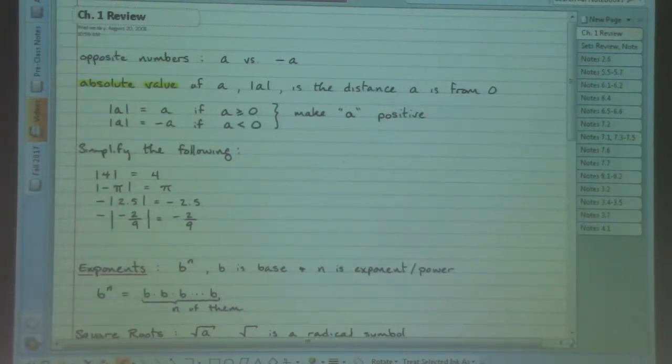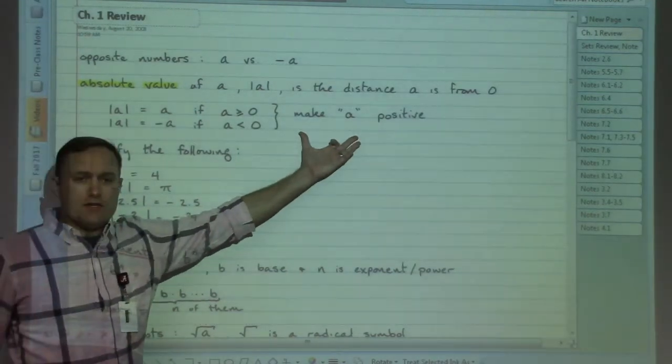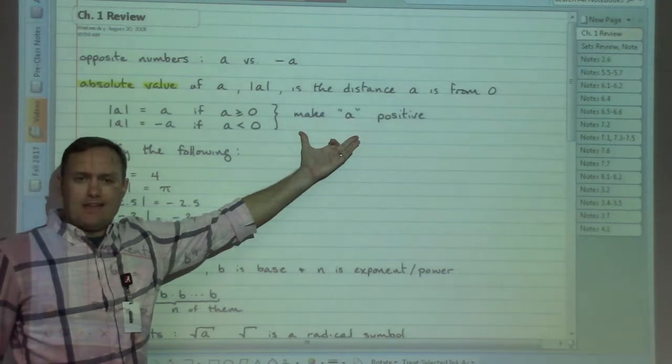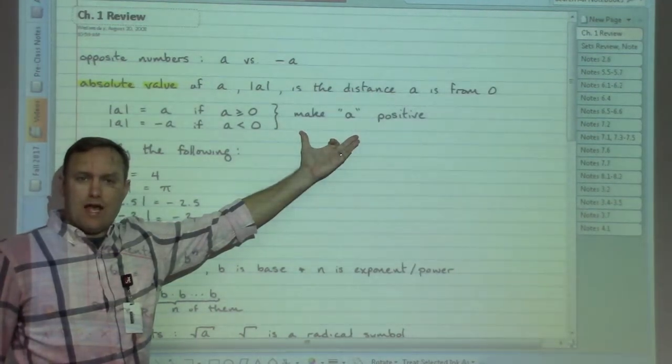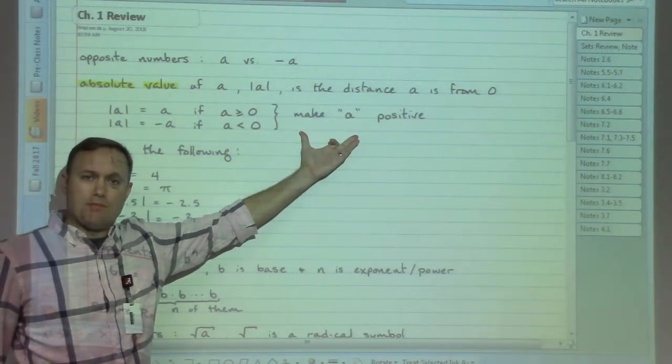Absolute value, officially defined as the distance from zero to a number. The gist of it is, it's like math jail. Any number that's inside the math jail will turn that number positive.